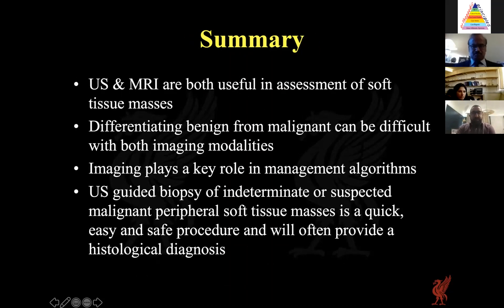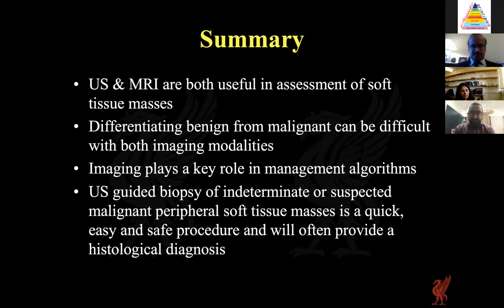In summary, ultrasound and MRI are both useful in the assessment of soft tissue masses. CT is reserved for very limited cases — patients unable to undergo MRI — with caution due to limited soft tissue characterisation. Differentiating benign from malignant can be difficult with both modalities, and imaging plays a key role in management algorithms. Ultrasound-guided biopsy of indeterminate or suspected malignant peripheral soft tissue masses is a quick, easy and safe procedure that will often result in a histological diagnosis.